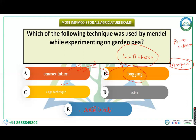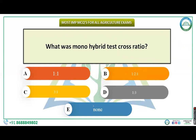Next question: what was the monohybrid test cross ratio? Monohybrid means studying only one character at a time. Mendel studied seven characters of Pisum sativum. For example, take the character of height — a plant can be either tall or dwarf, and these forms are regulated by different genes.